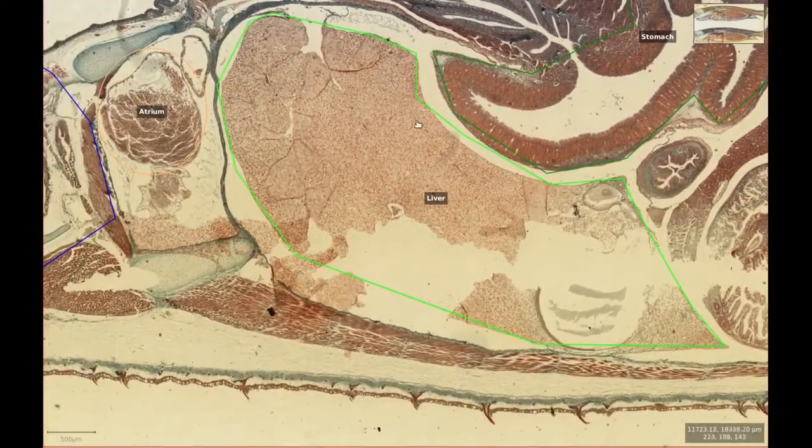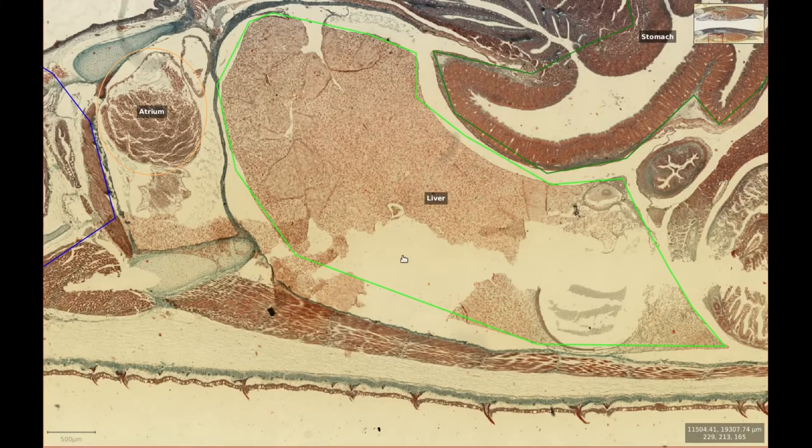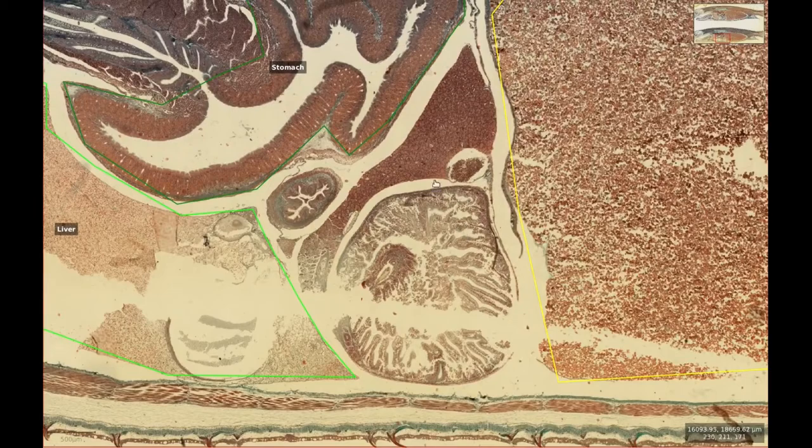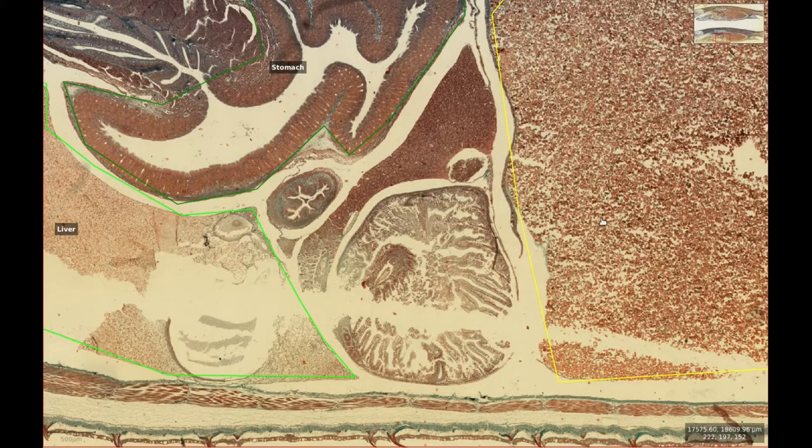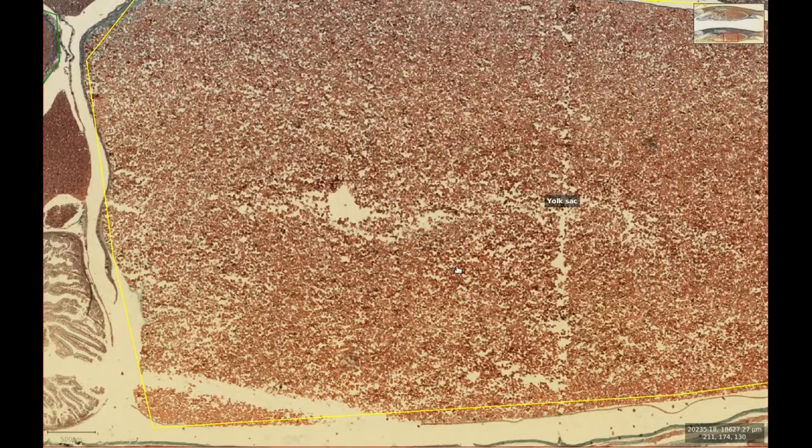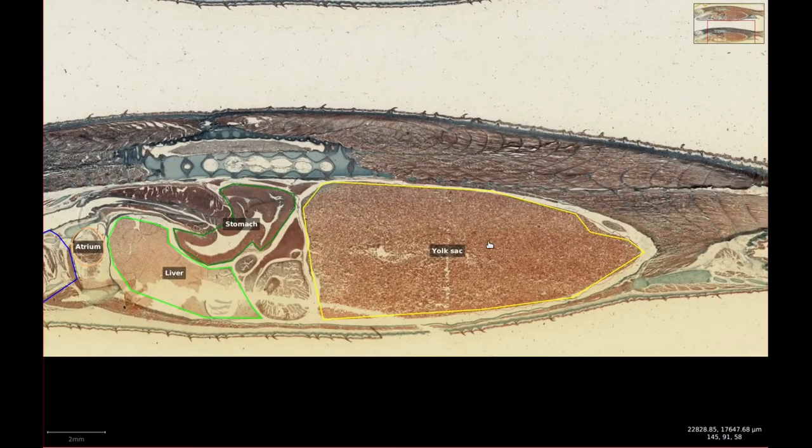Surrounding the stomach again is the liver, and caudal to all of that we have more sections of intestine and the yolk sac there again, dominating most of the coelomic cavity.